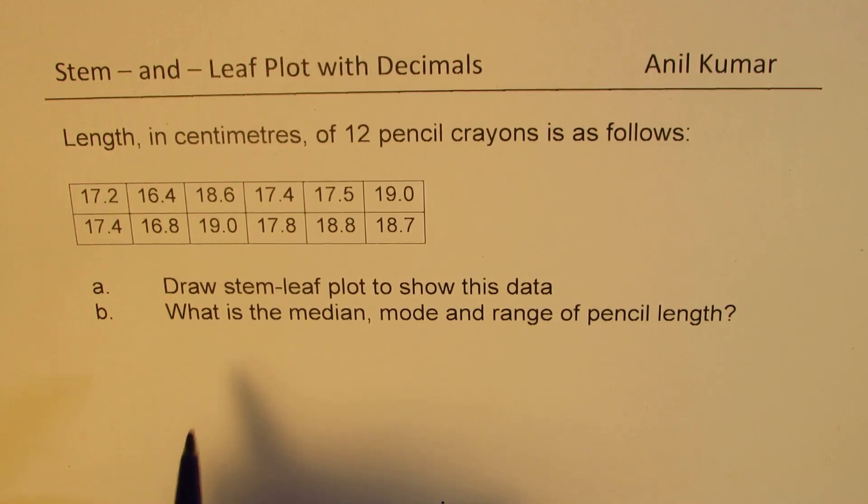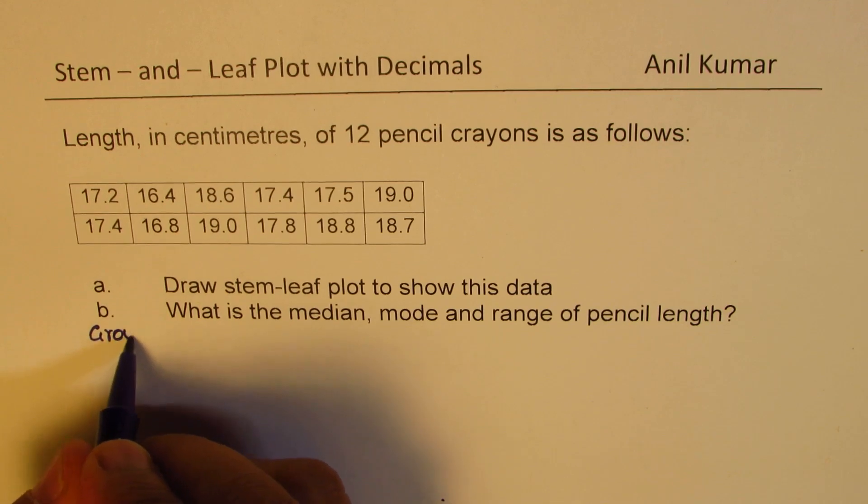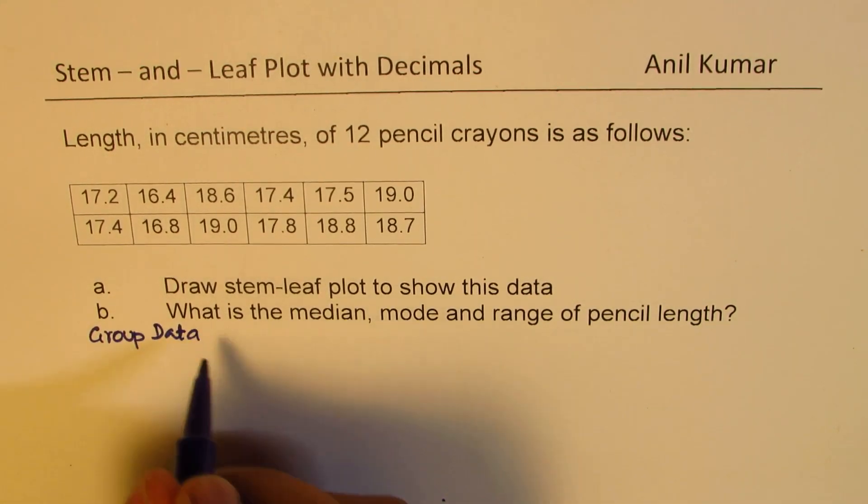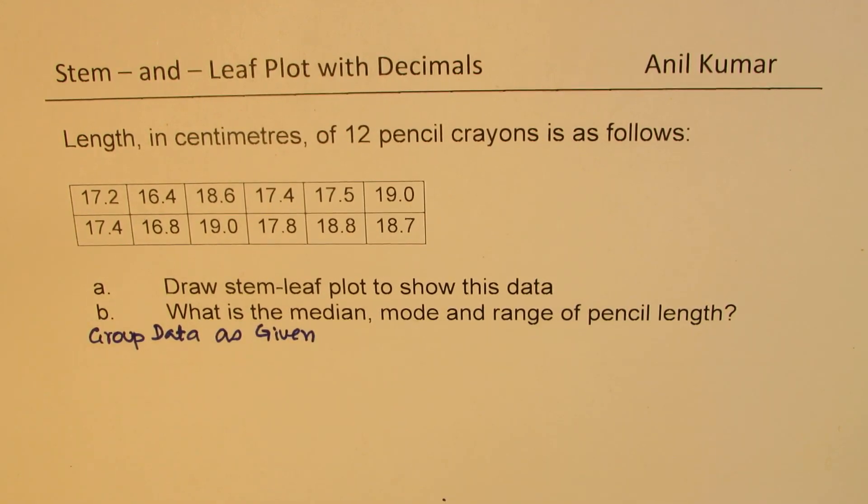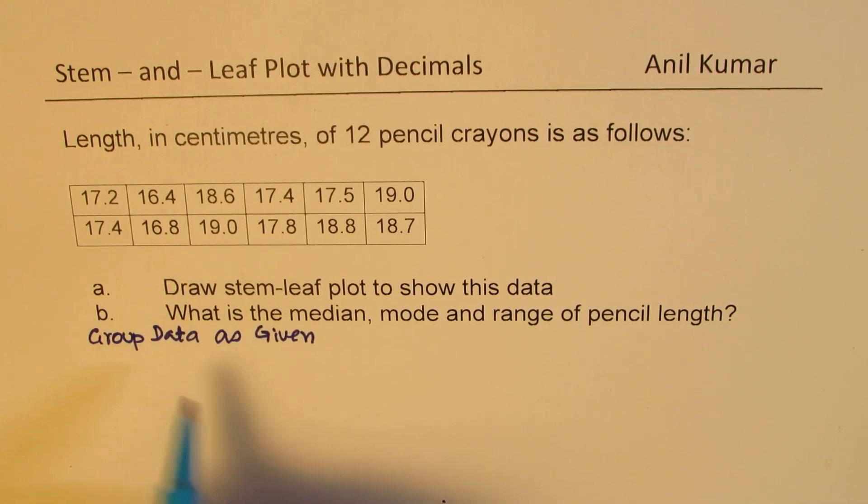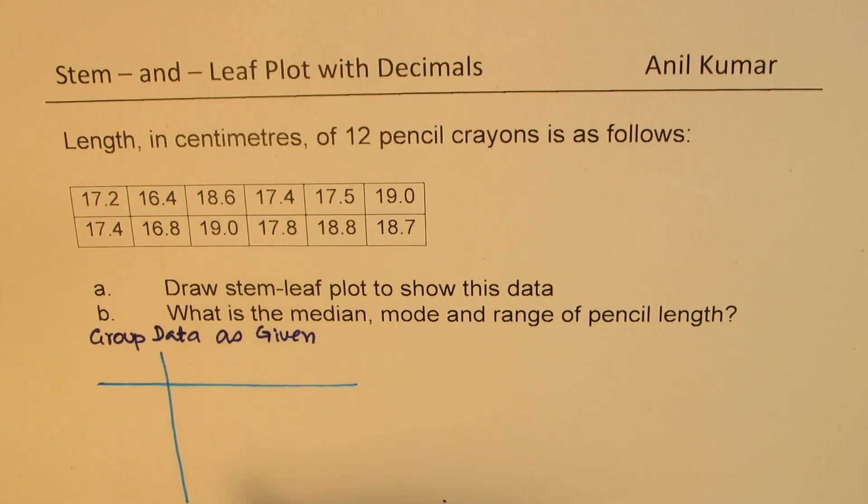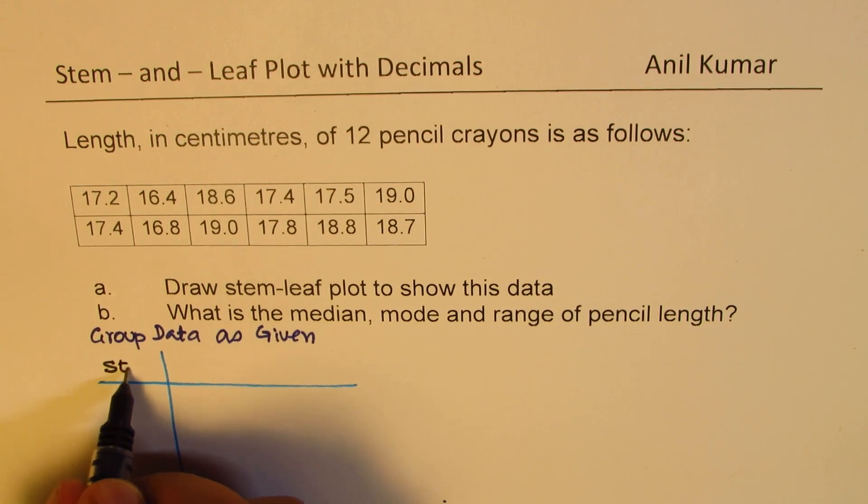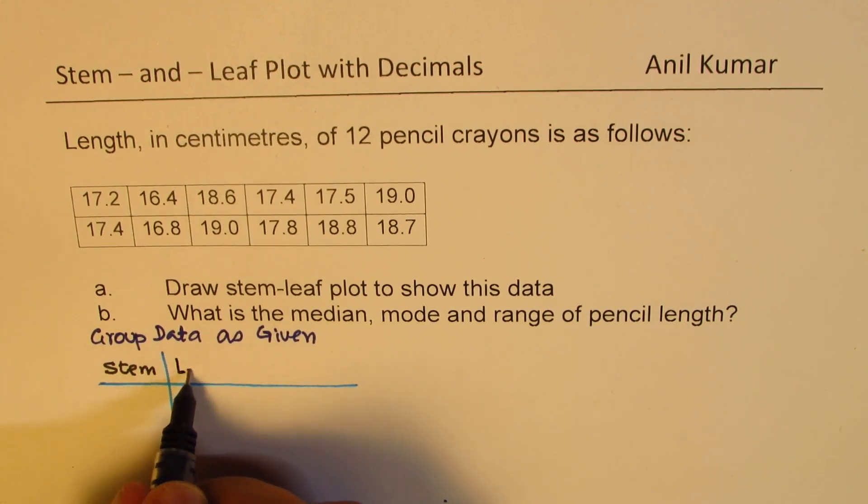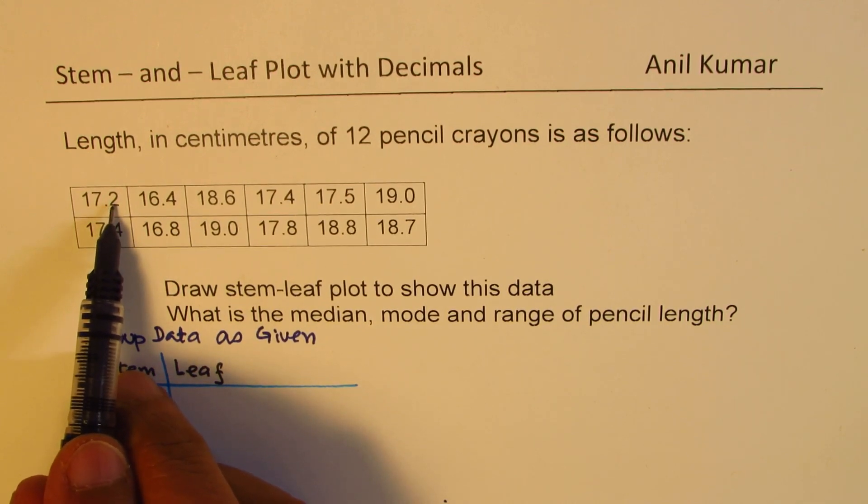In first step we'll arrange the data as given, so group data as given. The arrangement will be done so that we could have one digit in the leaf place and the rest for the stem. So we have stem part and the leaf part. Leaf is the last digit.